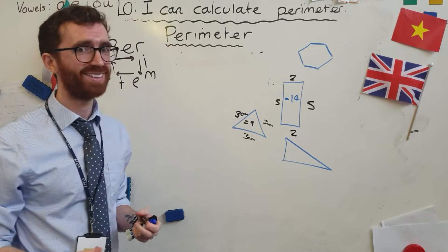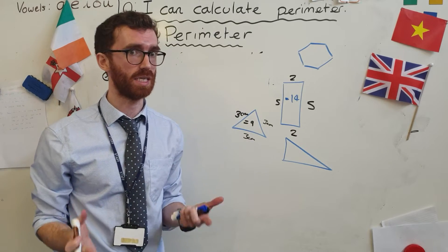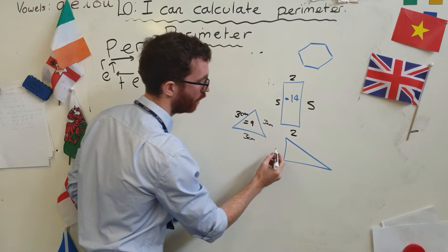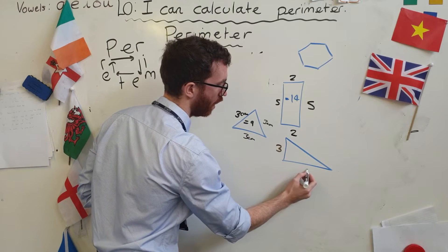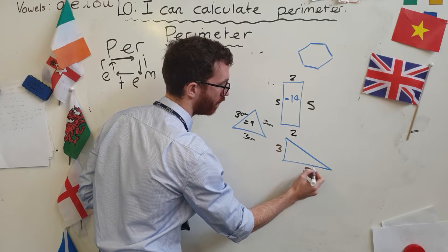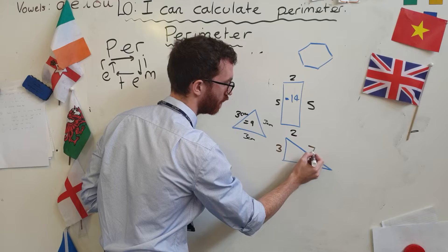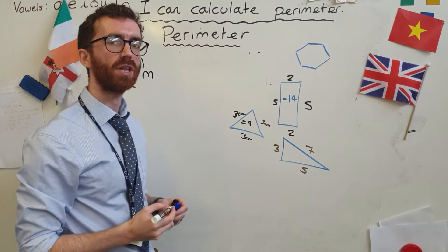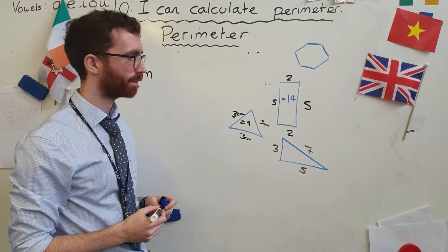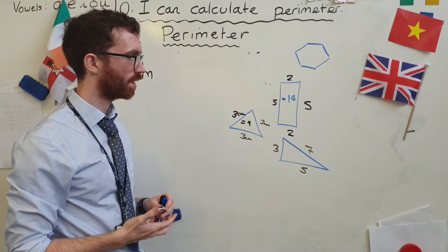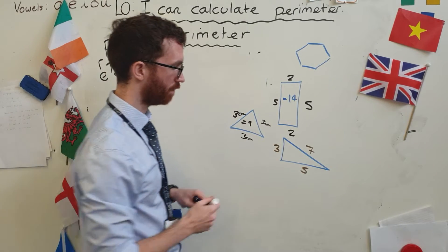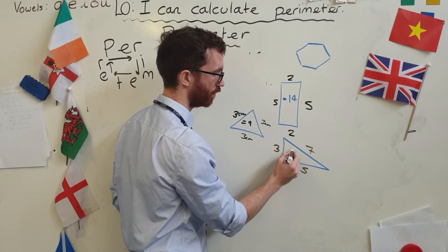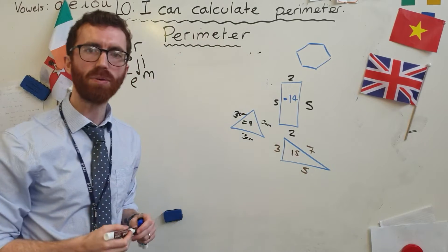Let's do a couple more. Let's say that this side is three, this is five, and this is seven. What's the perimeter of that shape? Seven and three is ten, and five is fifteen. Simple.